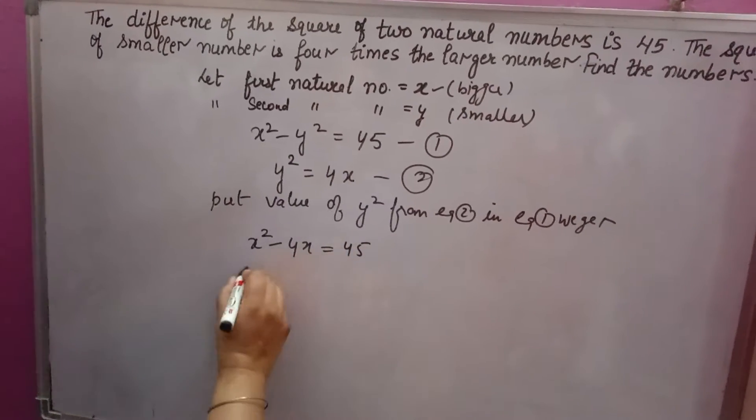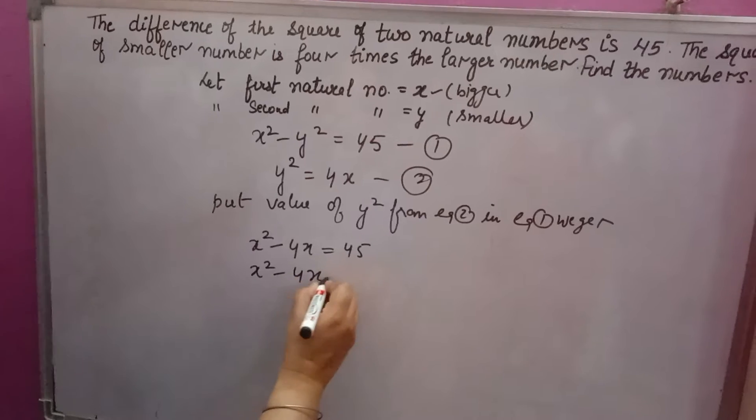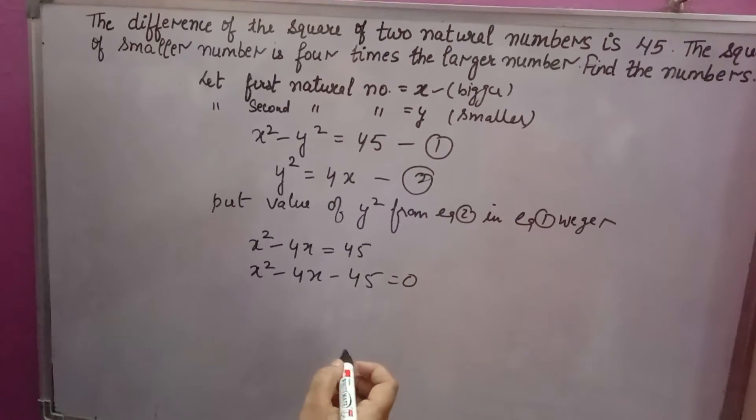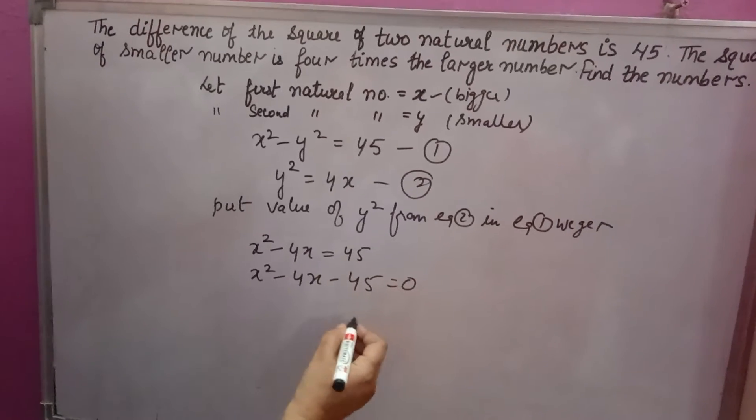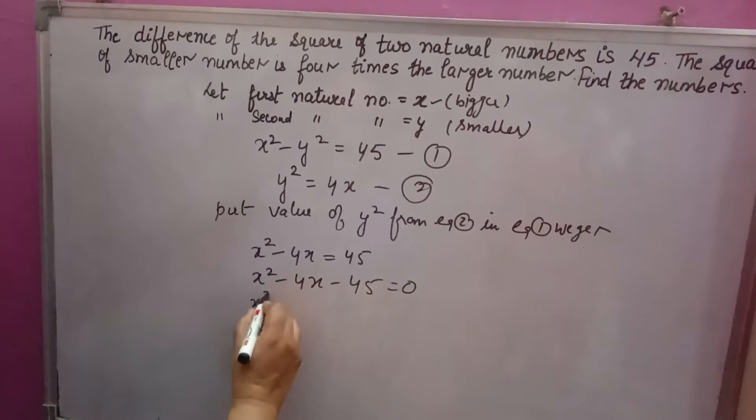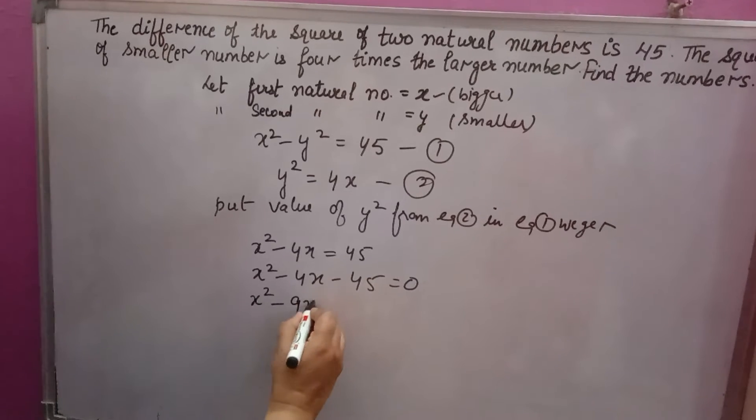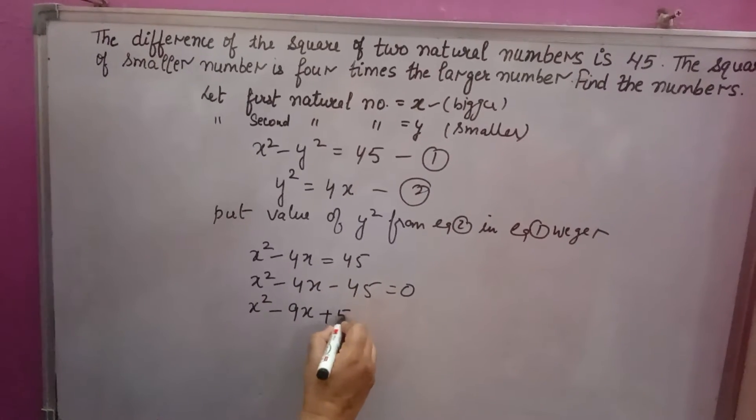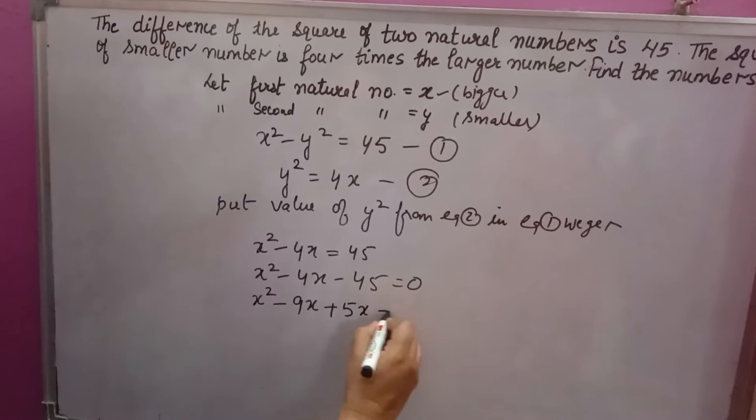It will become minus 45. Now make factors of 45: 9 and 5. 9 times 5 is 45. Here minus is there. So here minus 9x minus 9 plus 5 is minus 4. So minus 9x plus 5x minus 45 equal to 0.